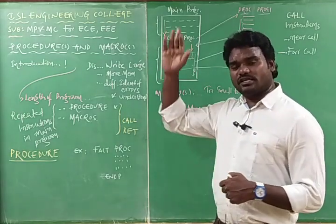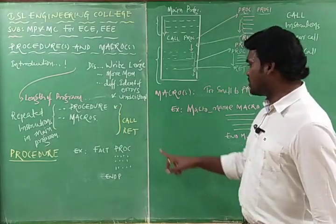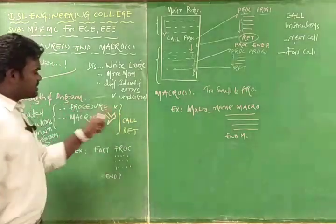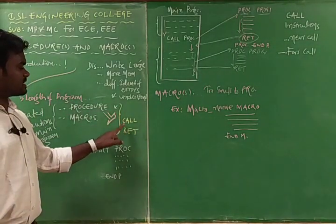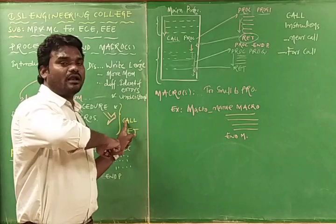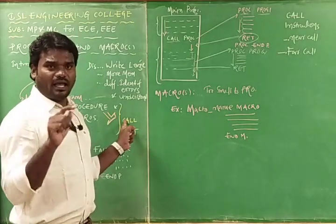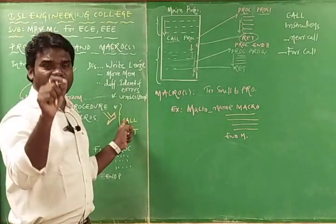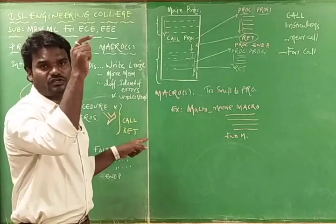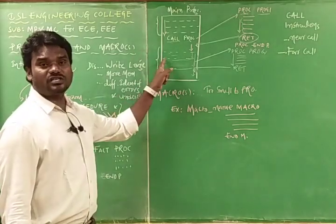To call the procedure we use the CALL instruction, and after executing the instructions in the procedure, to come back to the main program we use the RETURN instruction. So in the case of a procedure assembler directive, two instructions are used: CALL, which transfers program control to the memory where the procedure is found, and RETURN, which brings control back to the main program to execute the remaining instructions.